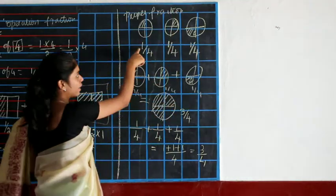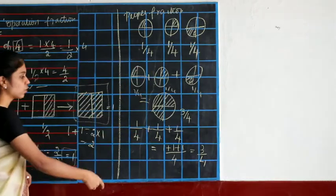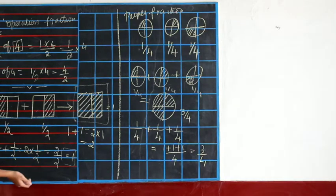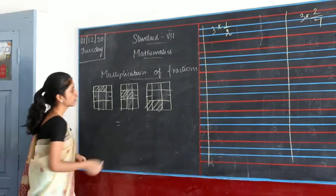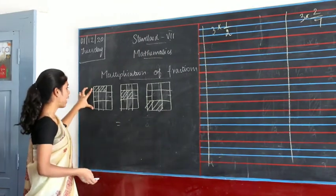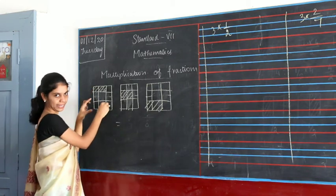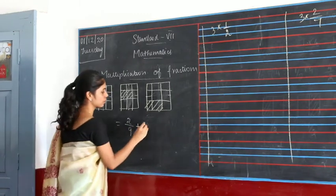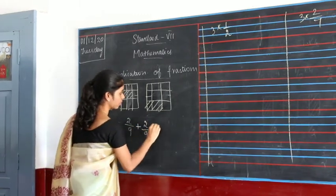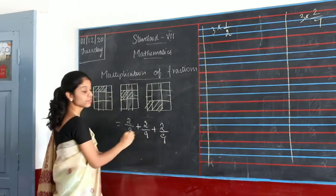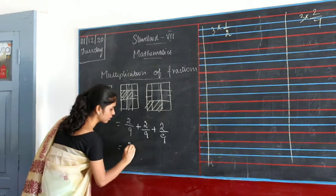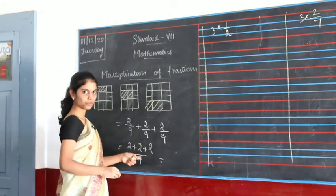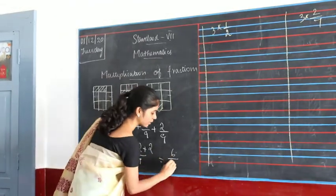Here 1 by 2 is also lesser than the denominator. Now look at this example. Here you have 9 portions out of which 2 are shaded, and same in the others. You have the same denominator, so you can write 2 plus 2 plus 2 divided by 9. 2 plus 2 is 4, 4 plus 2 is 6, giving you 6 by 9.